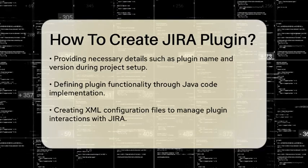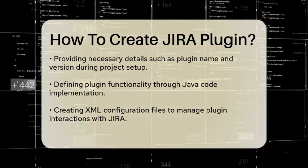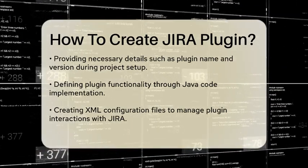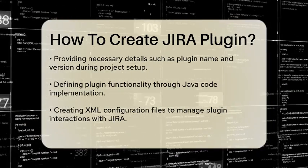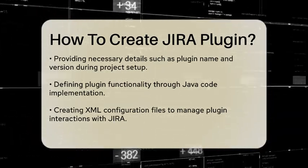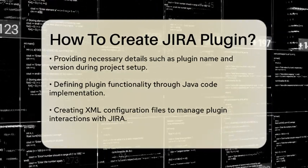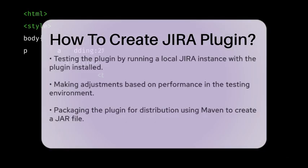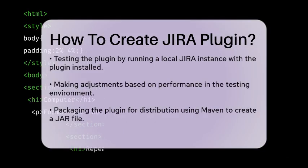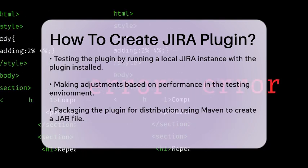Once your project is set up, you can start defining the functionality of your plugin. This typically involves writing Java code to implement the features you want. You may also need to create configuration files in XML format to specify how your plugin interacts with Jira.